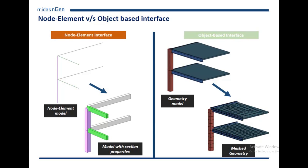Whereas in NGen, integrating what is now the CAD approach, everything done with modeling is based on geometry. You can draw sections and extrude them — almost like working on AutoCAD — using CAD-based commands to create your whole structure. In the very end, you just specify the mesh size and the program will automatically mesh it before running the analysis and assigning structural properties. This establishes the main difference between these two approaches, and we'll see some of the benefits that come from using the object-based interface.